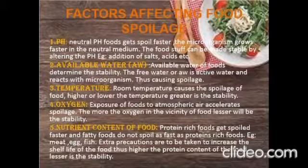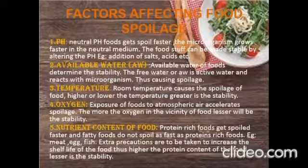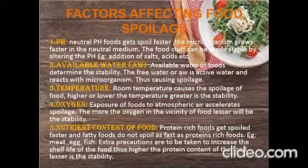Temperature: room temperature causes spoilage of food. Either the food has to be kept at high temperature or at low temperature to increase its stability. Oxygen: on a daily basis, we have seen that foods kept outside tend to get spoiled. Therefore, the more oxygen available in the vicinity, the more the food loses its stability. Nutrients: the nutrient content of the food matters — protein-rich foods like eggs, fish, and meat get spoiled faster than other food groups. Extra precautions are needed to increase the shelf life of these foods.